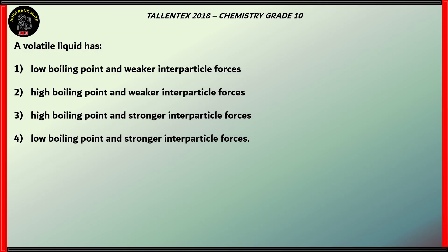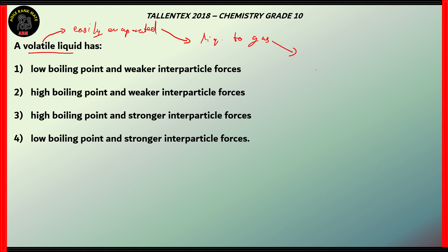Let's look at another question. This one is from chemistry. A volatile liquid has: low boiling point and weaker interparticle forces; high boiling point and weaker interparticle forces; high boiling point and stronger interparticle forces; or lower boiling point and stronger interparticle forces. A volatile liquid is something that is easily evaporated — it turns from liquid to gas easily, so it must have a low boiling point. Therefore, options 2 and 3, which contain high boiling point, are incorrect.